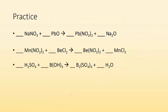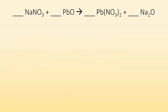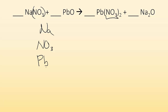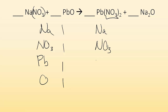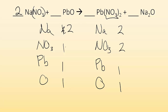Practice — pause the screen and try some of these. Welcome back! Let's take a look. Create an inventory: Na, NO3 — and here's a trick: because NO3 shows up as NO3 in the products, you can treat it as just one thing. And Pb and O. On the reactant side I've got one of everything. On the product side: one Pb, two NO3s, two NAs, and one O. NAs aren't balanced, so put a two in front of NaNO3 and update the inventory — now I have two NA and two NO3. Everything is balanced. That's all I had to do. I'm done.